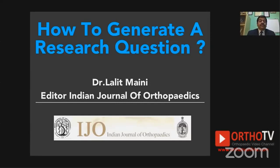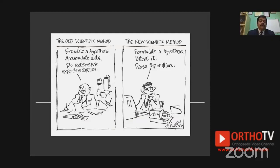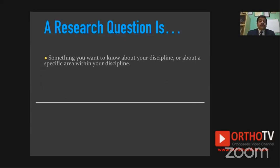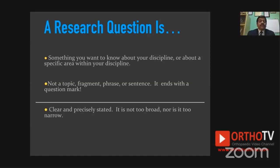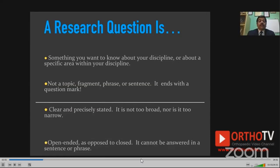If you look at the old scientific method, you formulate a hypothesis, accumulate data through extensive experimentation, and finally publish. The world is changing. A research question is something you want to know about your discipline or a specific area within it — not just a topic, fragment, or phrase. It ends with a question mark. The question needs to be clear and precise — not too broad, and not so narrow that it gets answered with a simple yes or no.